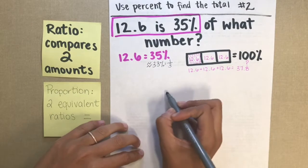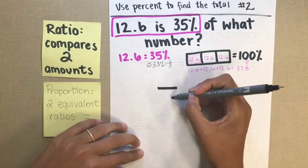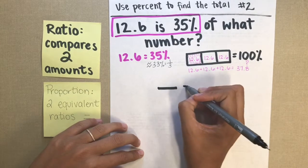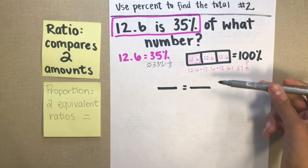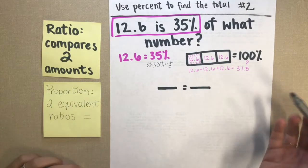So I'm going to set up my proportion here. There's one ratio. I'm comparing the top number to the bottom number. And it's equal to another ratio comparing the top to the bottom.